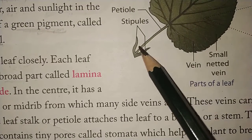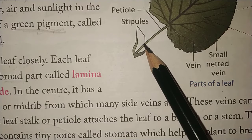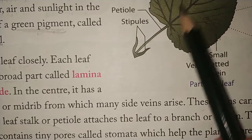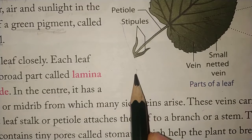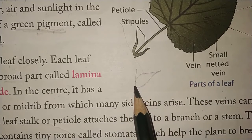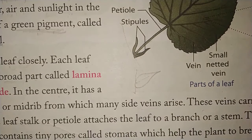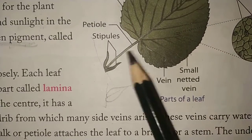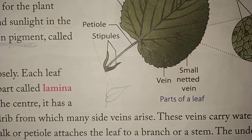This is the petiole, which we also call the leaf stalk. The petiole attaches the leaf to the stem or branch. If the leaf is attached to a branch, the petiole connects to the branch; if attached to the stem, the petiole connects the leaf to the stem.